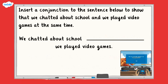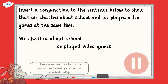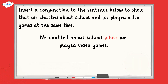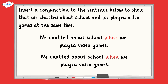In this question you're being asked to add a conjunction which shows that we chatted about school and we played video games at the same time. There are a couple of conjunctions which express time that could be used in this sentence. Well done if you said: we chatted about school while we played video games. Or, we chatted about school when we played video games. The conjunctions while and when express that both actions happened at the same time.